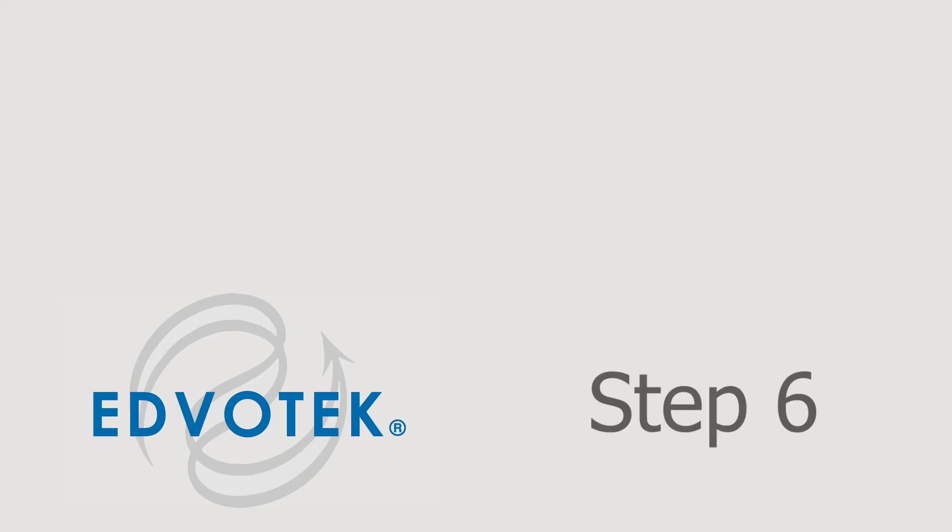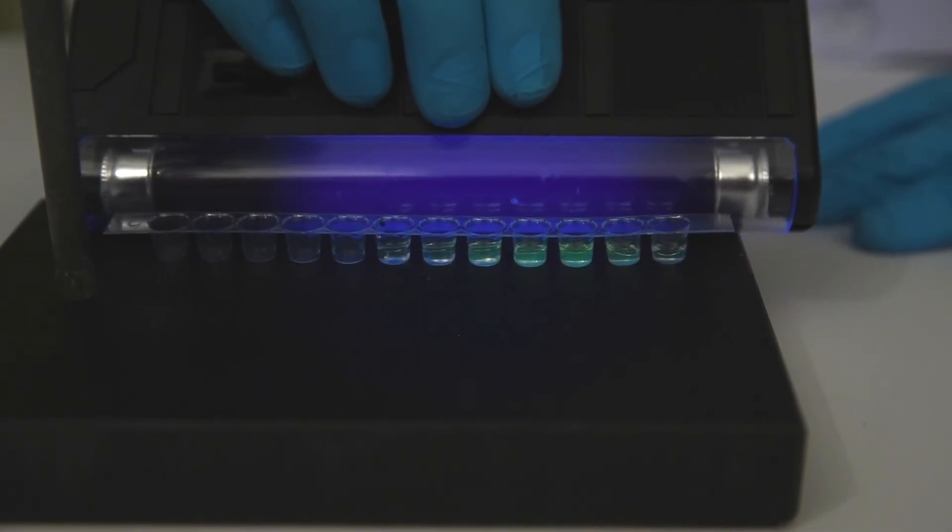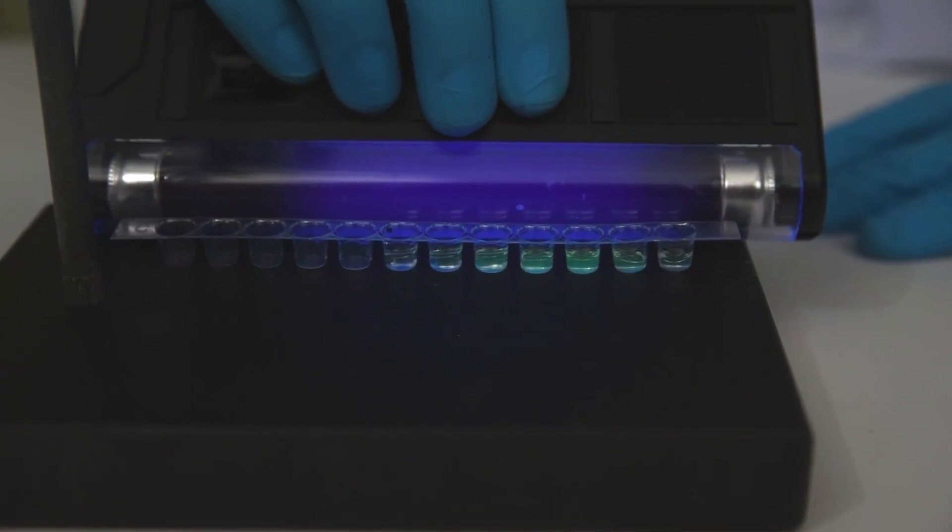Step 6: Check the fractions in the microtiter plate by using the long-wave UV light. Identify the well that contains the brightest levels of fluorescent proteins.